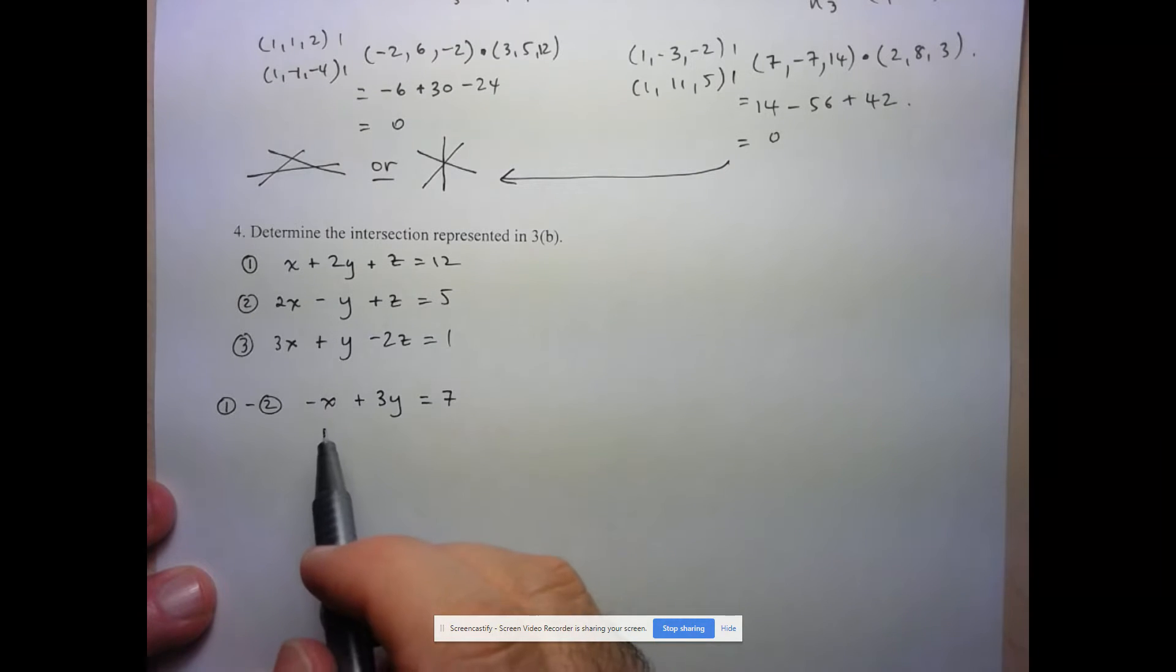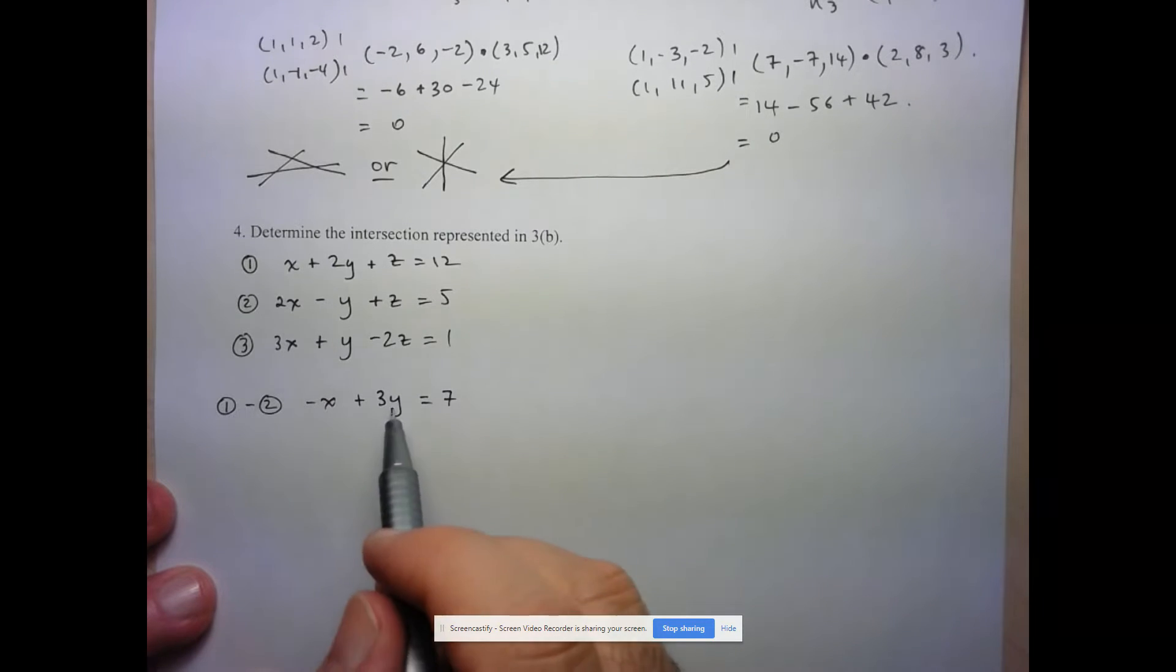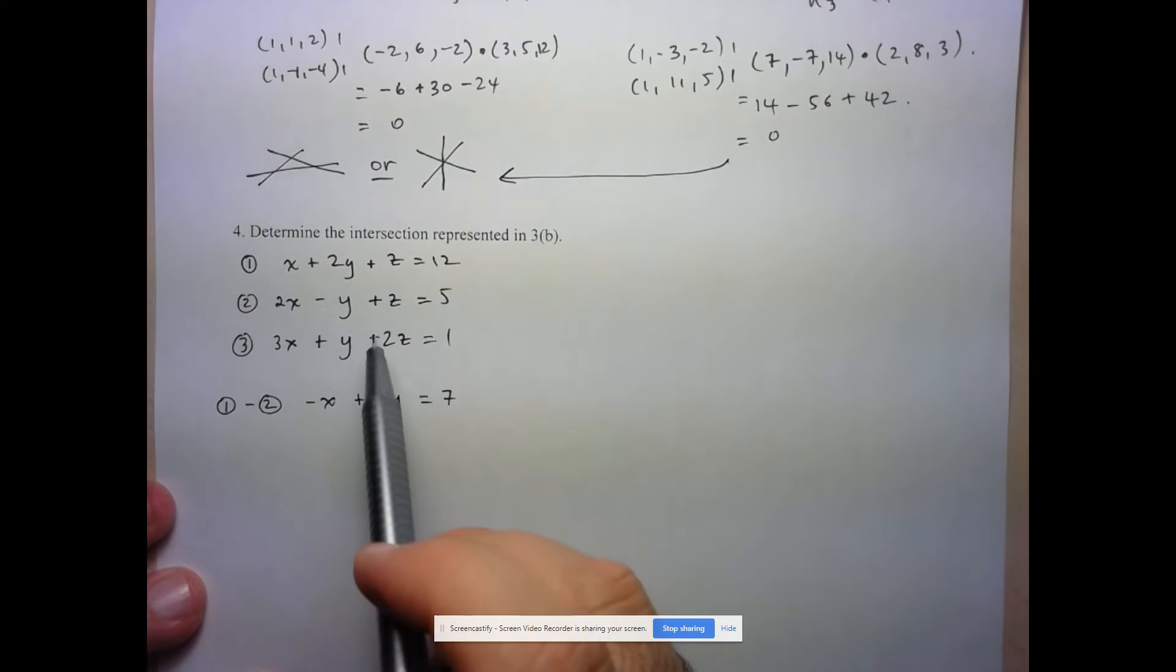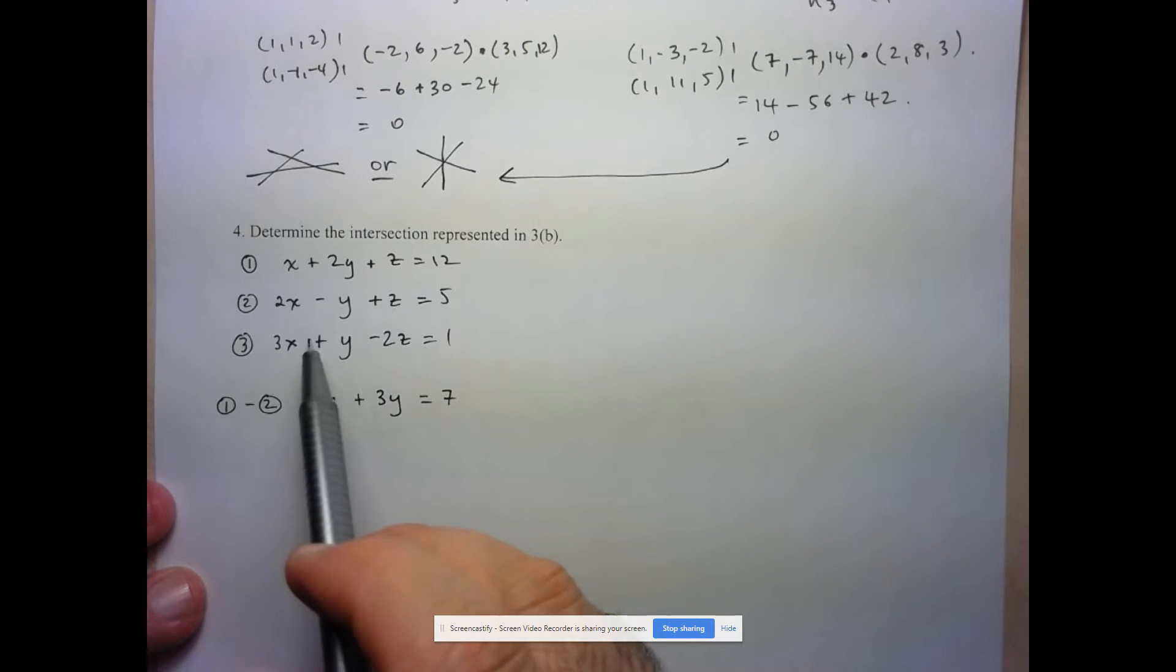What I'm going to try to do is create another equation in only x and y. Because if I can do that, then it means I'm going to have a system of two equations and two unknowns, which I can solve. So what I want to do is, again, eliminate z. In this case I can either use 1 and 3 or 2 and 3. I have to bring in that third equation in order to eliminate z. So I'm going to take 1 and 3.